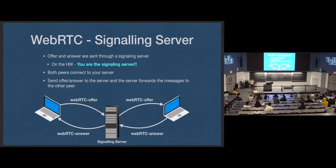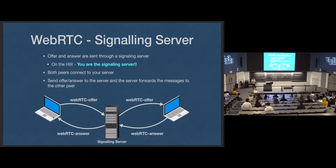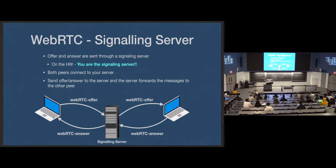So Peer 1 wants to send an offer to Peer 2 through the server — how does Peer 1 know where it's supposed to go? Peer 1 doesn't. It'll go to the server and say 'I would like to connect to this person,' and your server needs some logic to decide who that person is. Like, if you had authentication and 100 users logged in and somebody says 'I want to connect to this username,' you would find their WebSocket connection and send it to them. When they respond, you know who sent the request, so you respond back based on the UFRAG, making sure you send it to the right person.